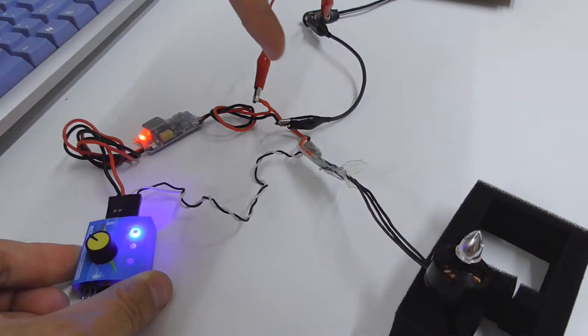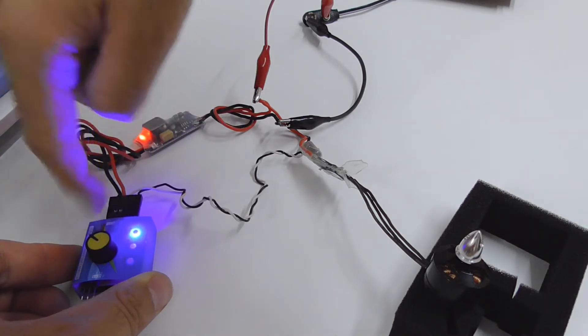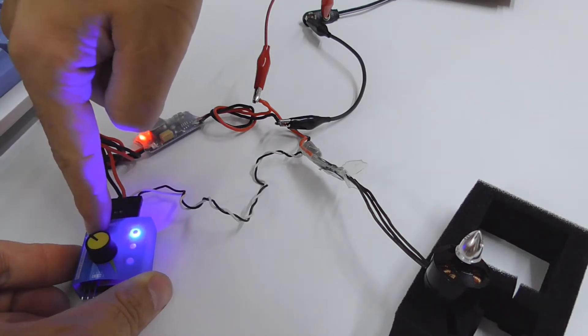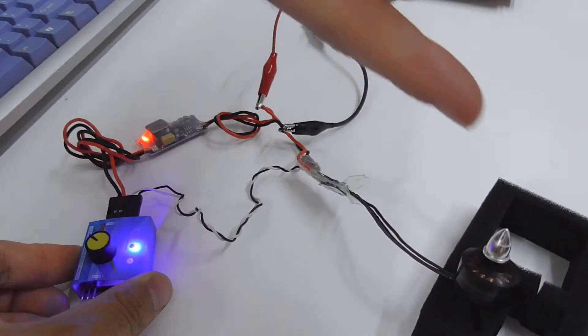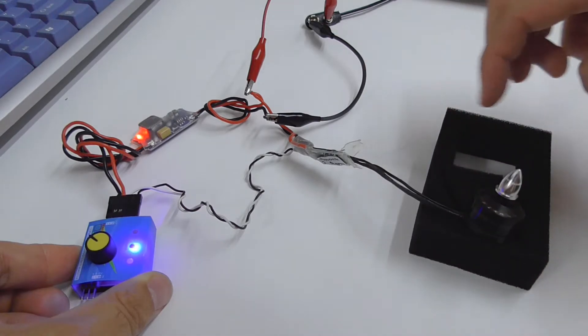It has two more modes. We are currently on the first one. Press that button in the upper corner. Now this will be the maximum speed. It's spinning fast. I have to use this foam because otherwise it's very noisy.